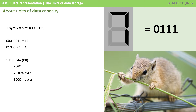A single byte, whilst useful for storing a single character, is not enough for other types of data, and therefore computers started using thousands of bytes of data called kilobytes. As the binary system is a base 2 number system, these larger units are 2 to the power 10 units. 2 to the power 10 is 1,024. So a kilobyte is actually 1,024 bytes, and not 1,000. Now, this doesn't make much sense when you're taught in maths and science that a kilo is 1,000. Therefore, we tend to approximate a kilobyte to 1,000 bytes just for simplicity.